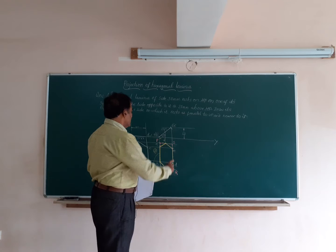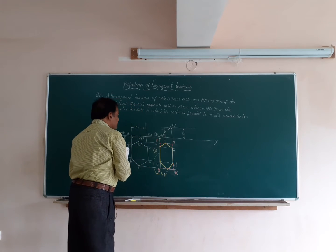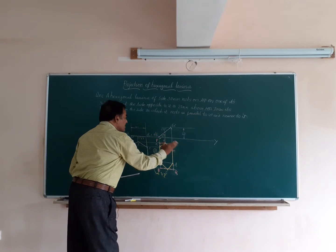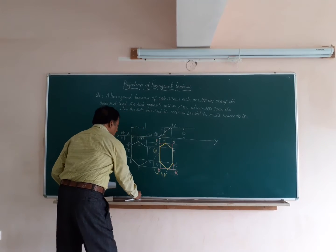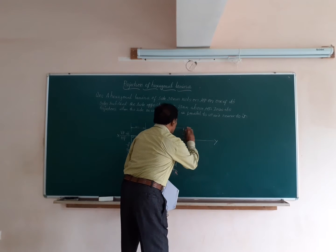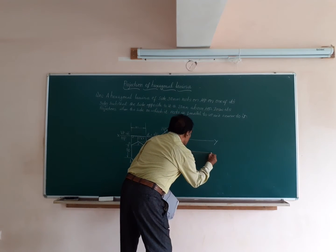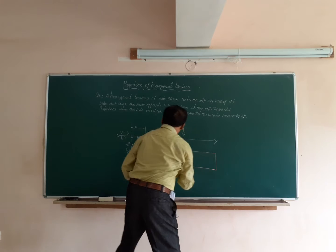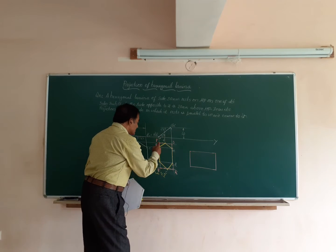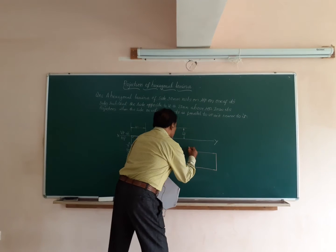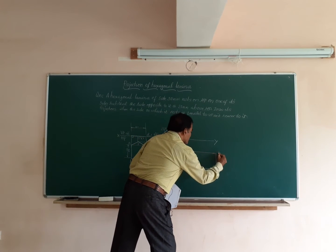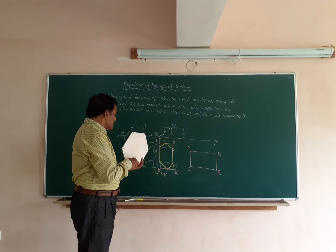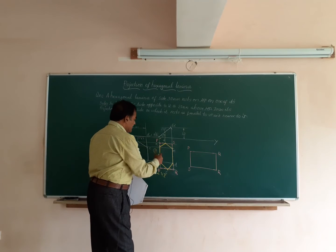I am going to redraw this box PQRS such that PQ becomes horizontal, because side AB on which it rests has to become parallel to VP. Redraw that figure here as rectangle PQRS. AB has to be nearer to VP, so PQ is placed accordingly — this is PQ, this is R, and this is S. In this box PQRS we have to obtain the figure ABCDEF.